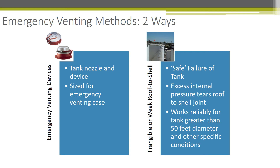An alternative is to use a frangible roof, where the connection between the roof and the shell is weaker. When overpressure occurs, this weaker connection pops open and the entire roof kind of opens like a soda can, allowing an immediate relief of pressure — which is significantly better than a catastrophic failure that can be caused from an emergency venting overpressure event.